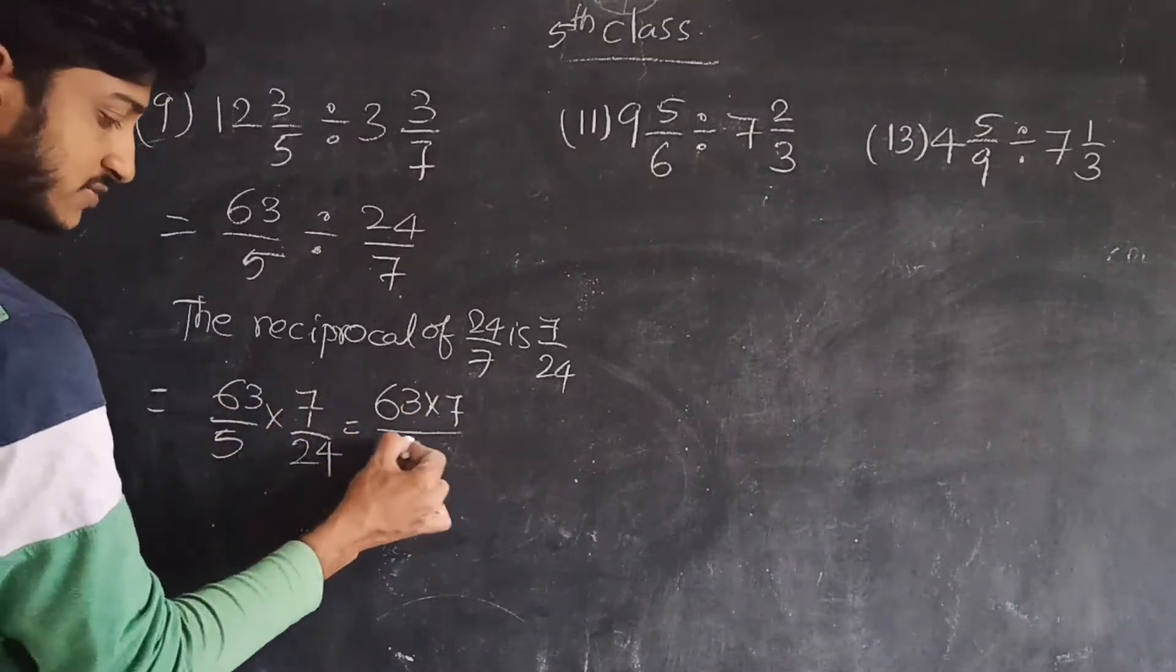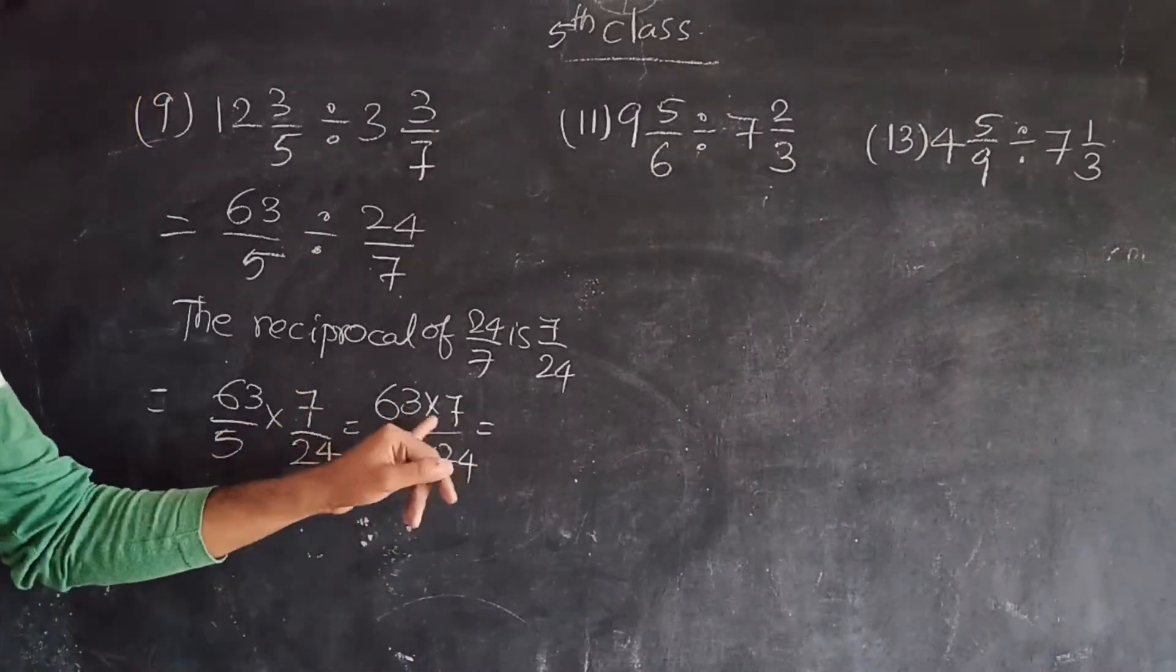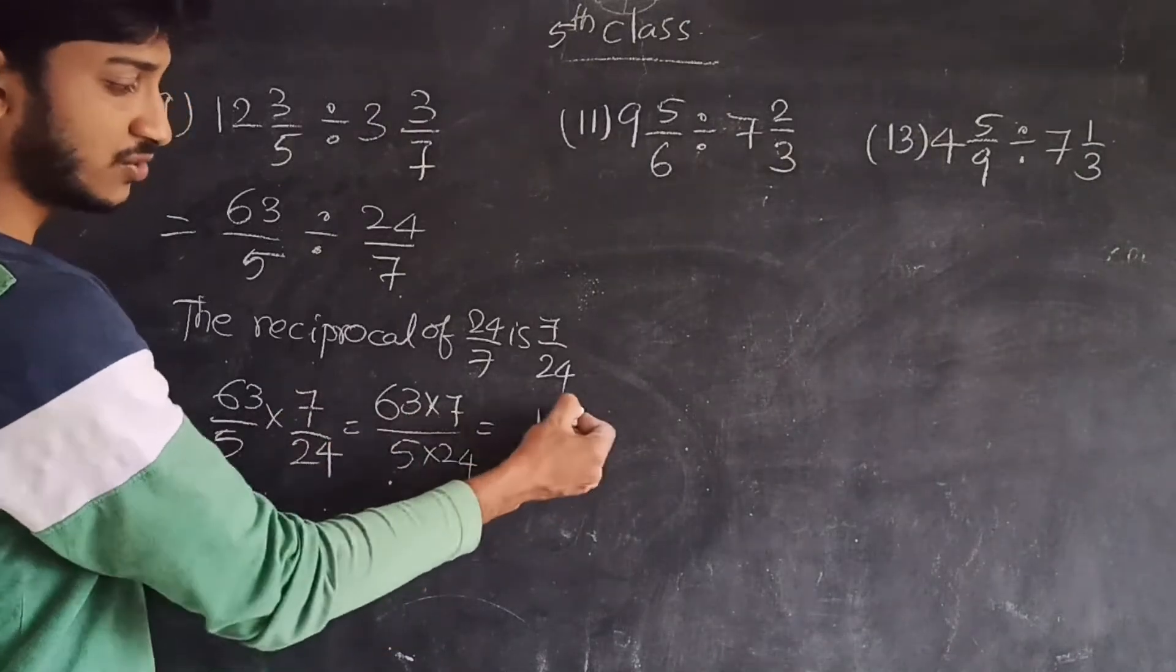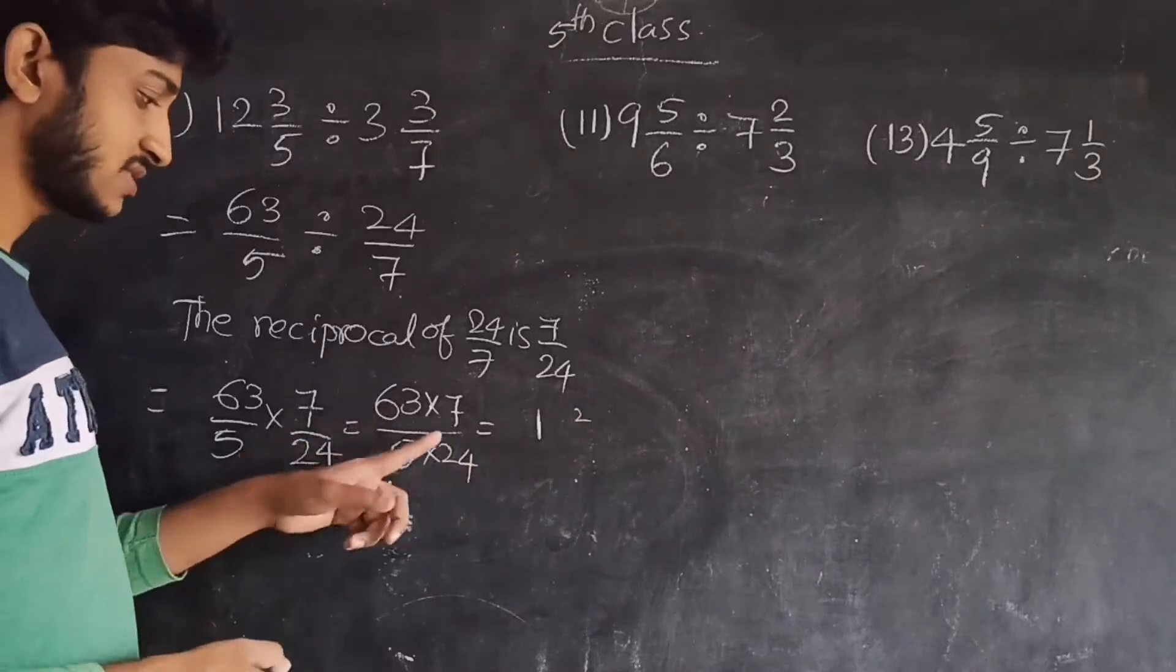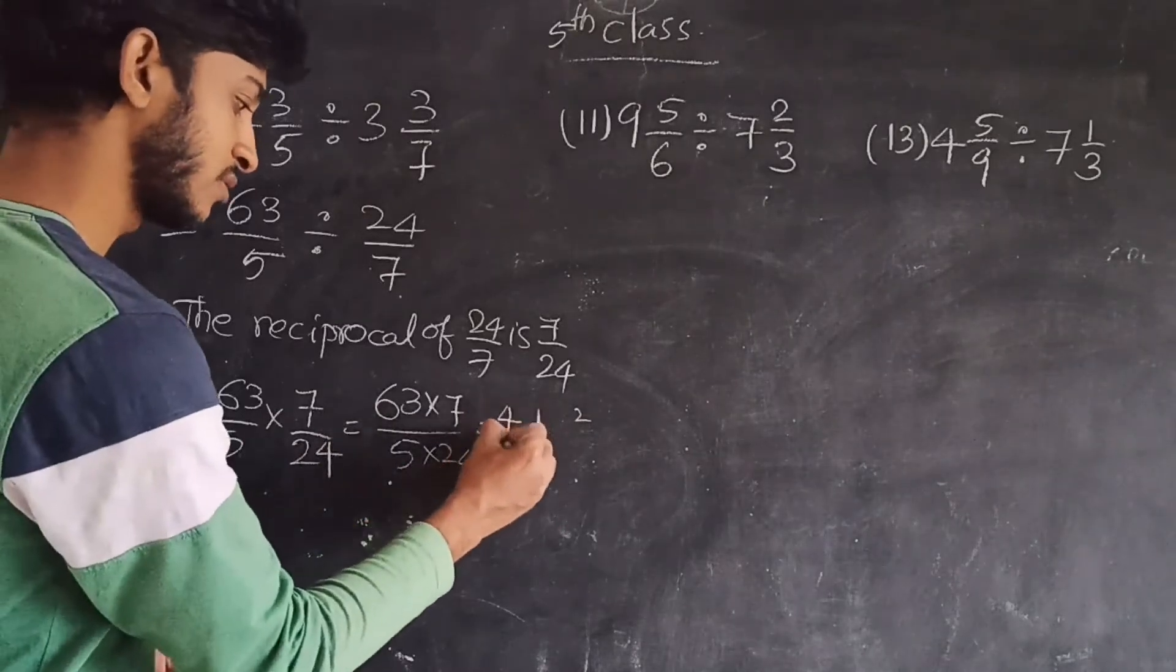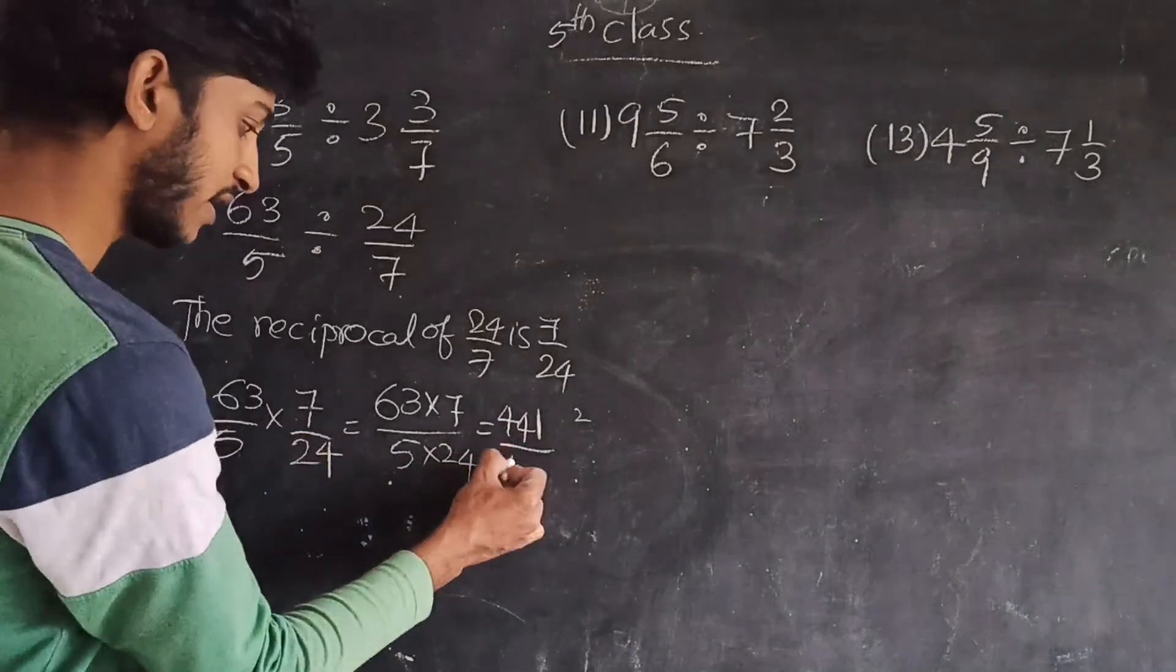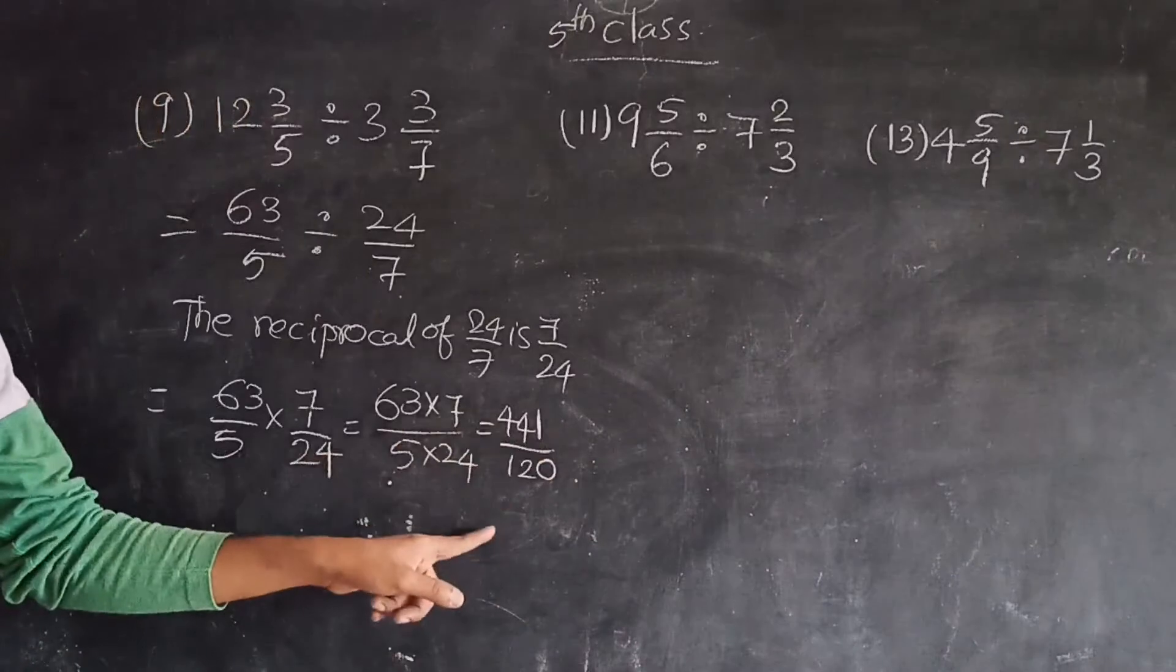Multiply means numerator into numerator divided by denominator into denominator, which is 5 into 24. So let me simplify: 63 divided by 7 equals 9. 7 times 6 is 42, 42 plus 2 is 44. So 441 divided by 5 into 24 is 120.